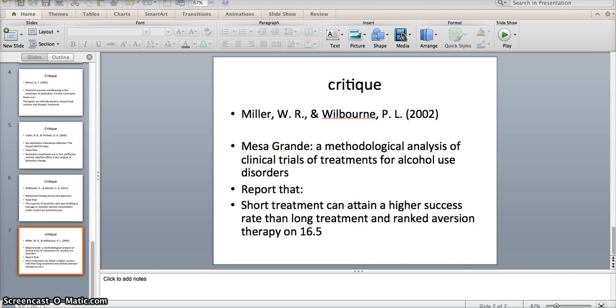Finally, a study comparing a wide range of different treatments for alcoholism ranked aversion therapy at 16.5. Miller and Wilbourne 2002 analyzed results from several studies based on controlled trials involving 46 treatment modalities, and their conclusion was that short treatments can attain a higher success rate than long treatments, which in turn questioned the appropriateness of periods of hospitalization. This corroborates the position put forward by previously discussed papers.